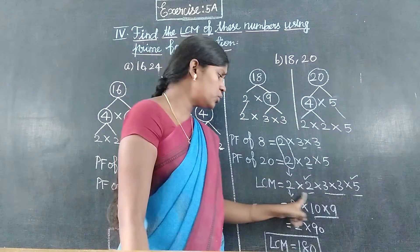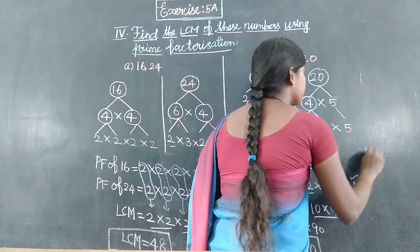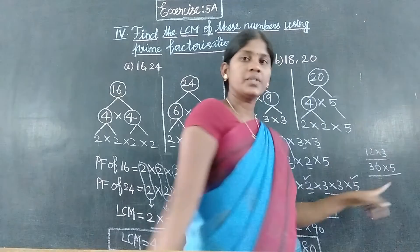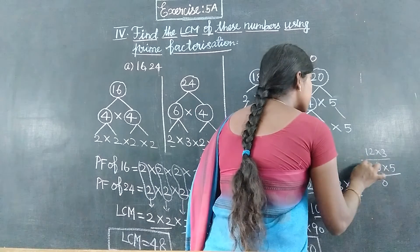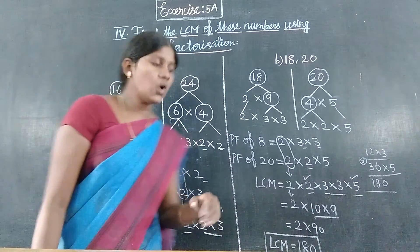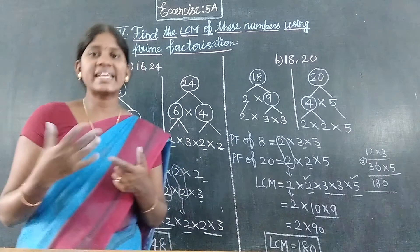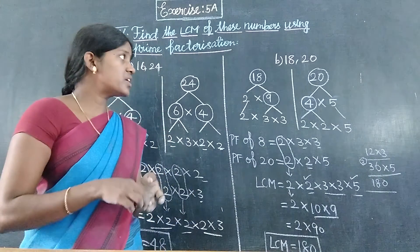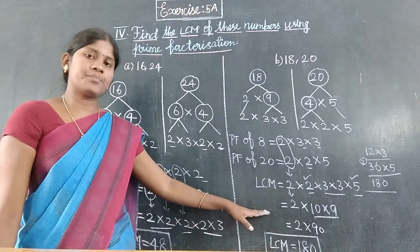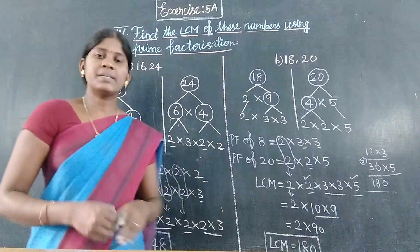Verification: two twos are 4, four threes are 12, twelve times 3 is 36 — wait. Two threes are 6, and remaining is 5. Six fives are 30, and balance three gives 90 — so 18 times 10 equals 180. The same answer 180 confirms LCM equals 180. We multiply common and uncommon factors together to get LCM. Thank you students.